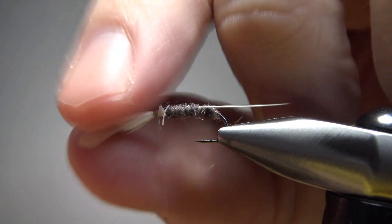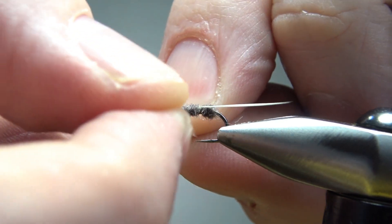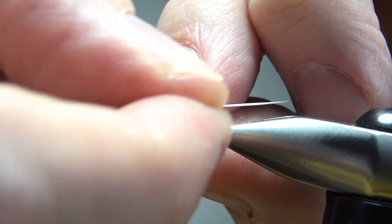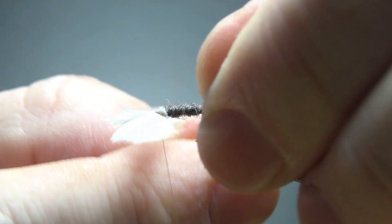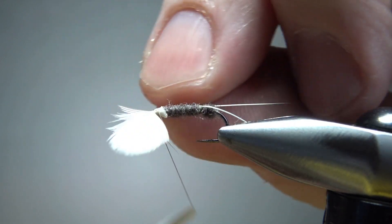Because we're going to split these up and then do some figure eight X-wraps in between them to get them coming off the hook perpendicular. And we're going to end up with a bunch of those fibers sticking forward that we're going to have to trim. But that's okay. I think it's a good trade-off because it does make this fly a good bit easier to tie.